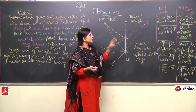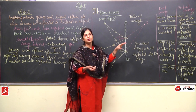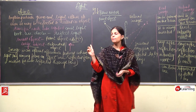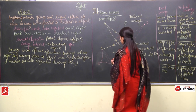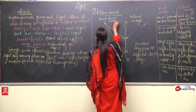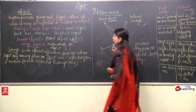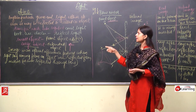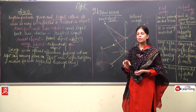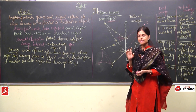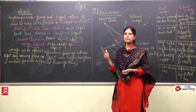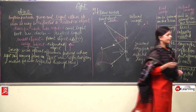This is the difference between real image and virtual image. In this example we took a point object. Now I will make another diagram where I will take an extended object. Please note this and we will revise again.